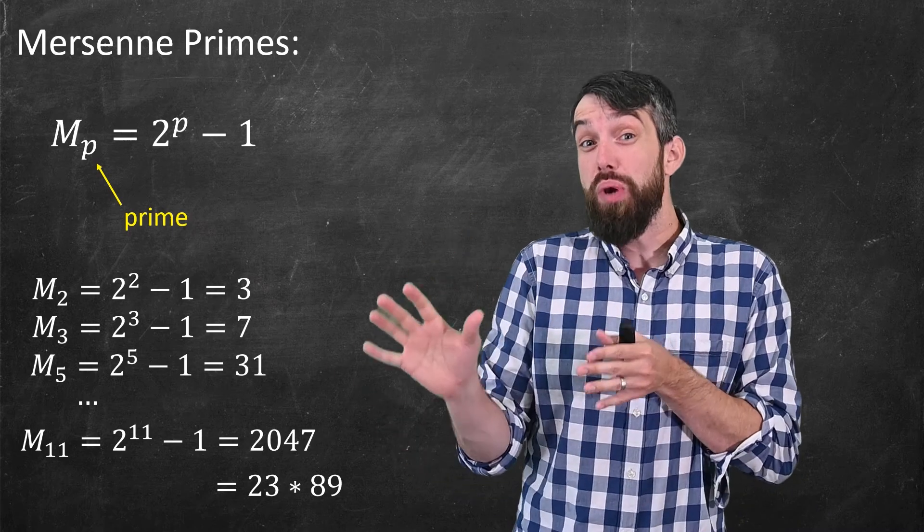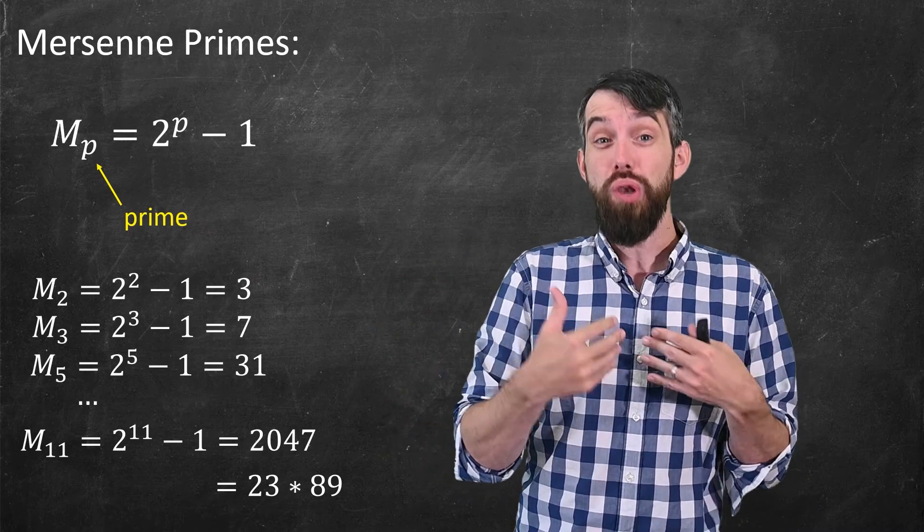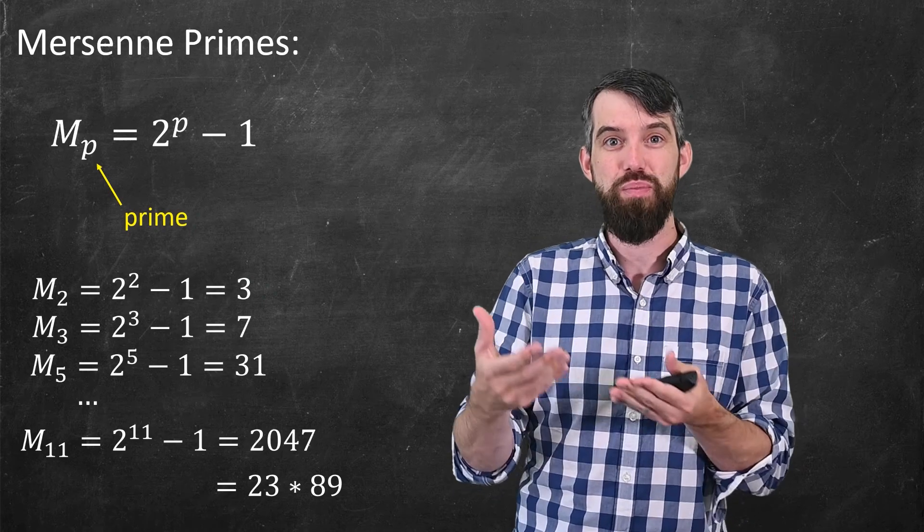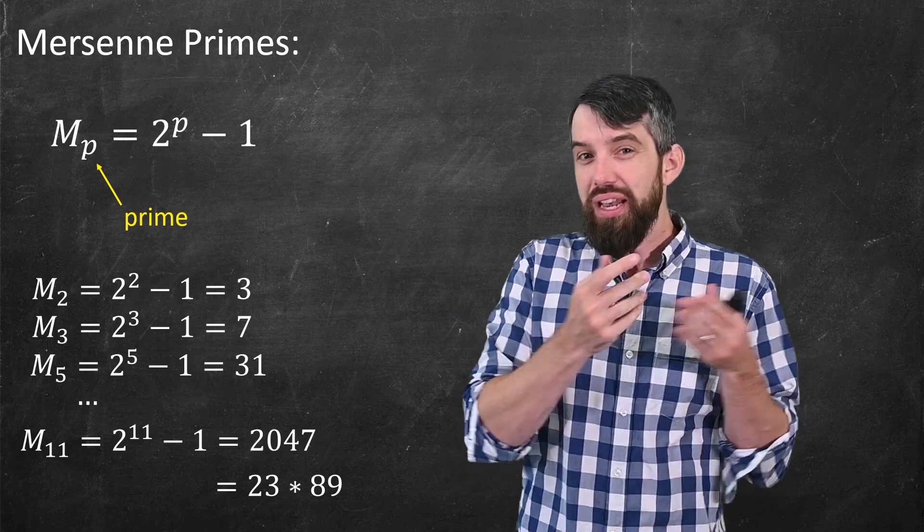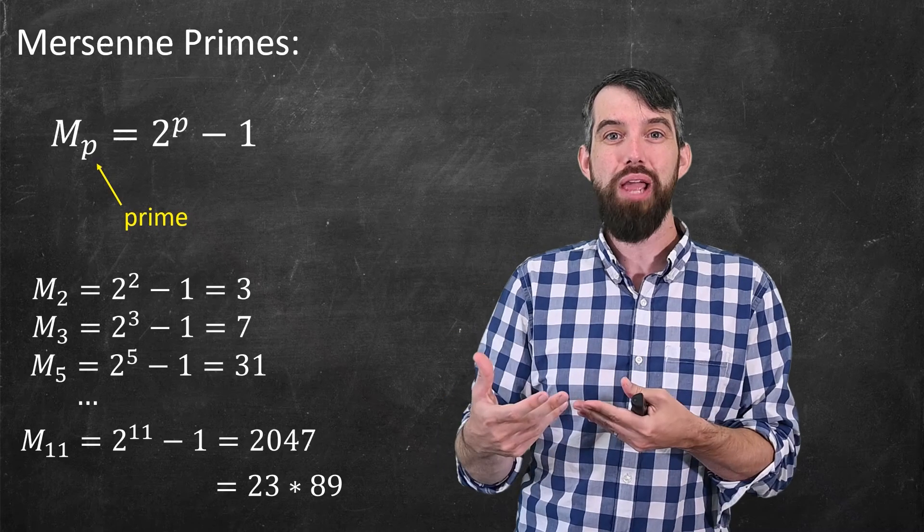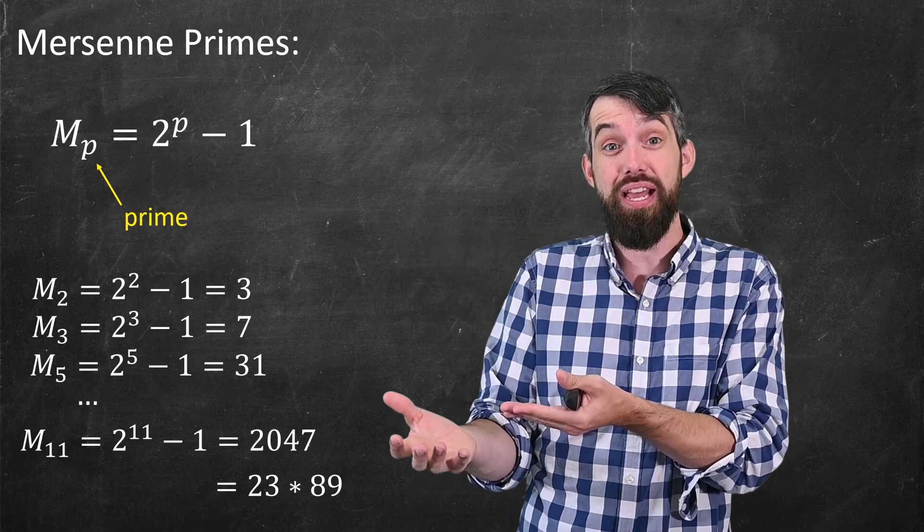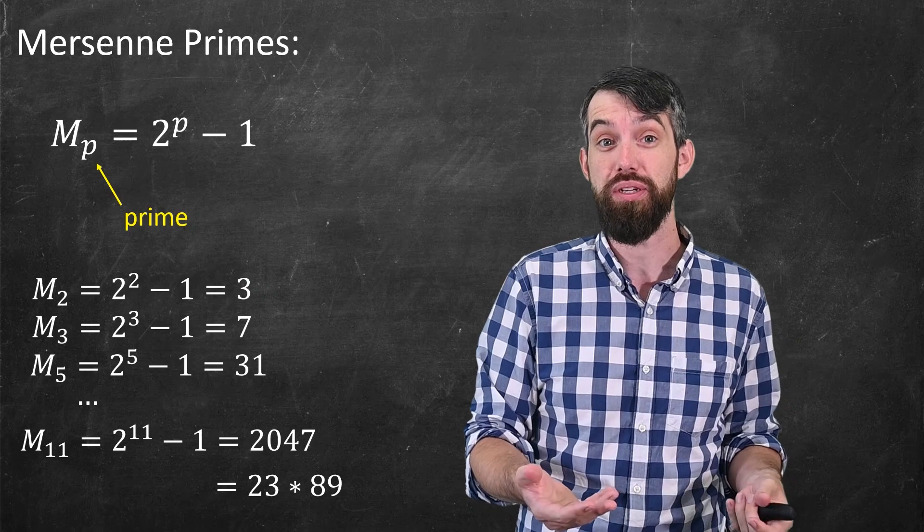In fact, there's a lot we don't know. For instance, we don't know whether there's infinitely many Mersenne primes out there. Yet nevertheless, Mersenne primes are really good candidates to find extremely large prime numbers.